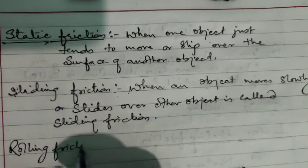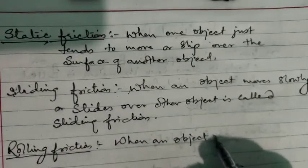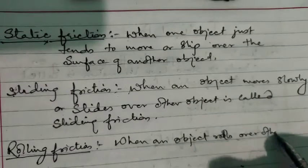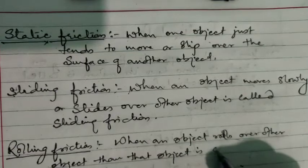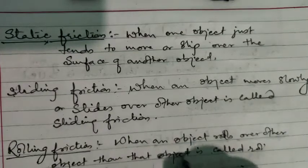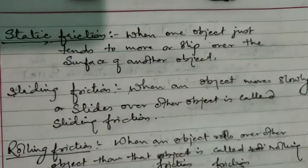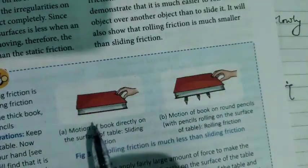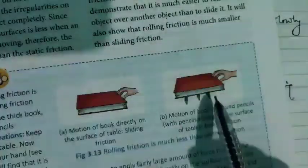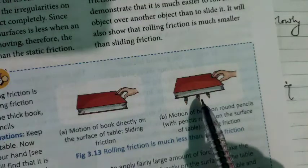The third type of friction is rolling friction. Rolling friction means when an object rolls over another object, that type of friction is called rolling friction. For example, a book kept on a table produces sliding friction. But if some pencils are kept below the book, it starts rolling, and the friction generated is called rolling friction.